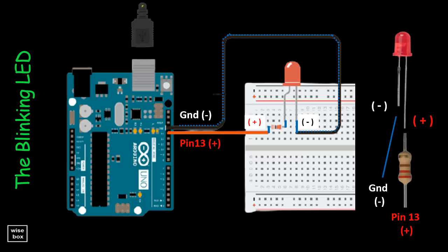Thus, make sure the positive LED wire connects to positive pin 13, while the negative LED wire goes to the ground. Again, the resistor can be placed on either the positive side or the negative side.